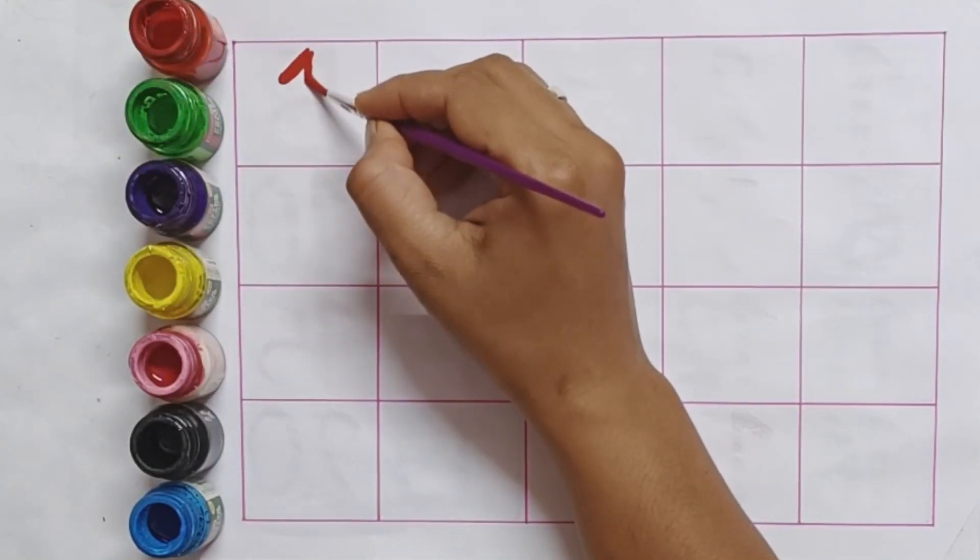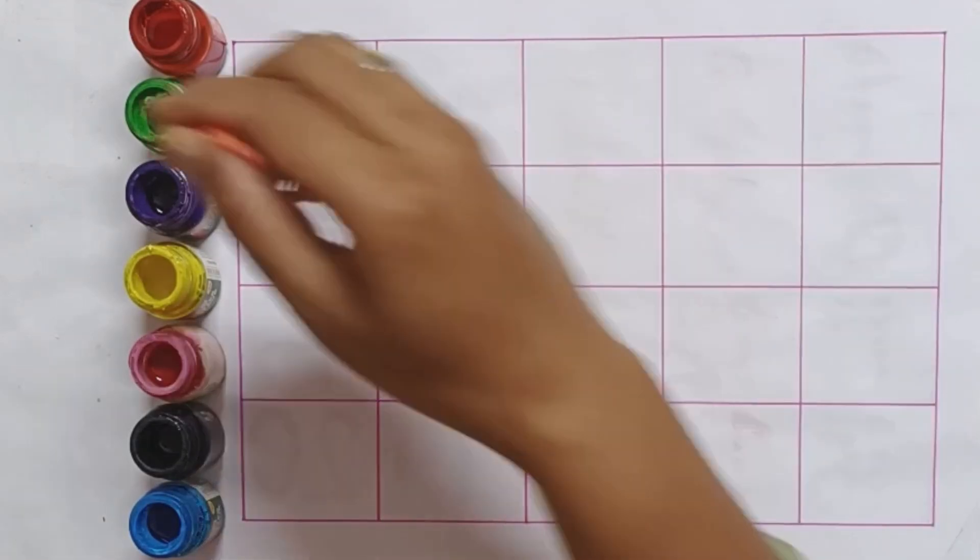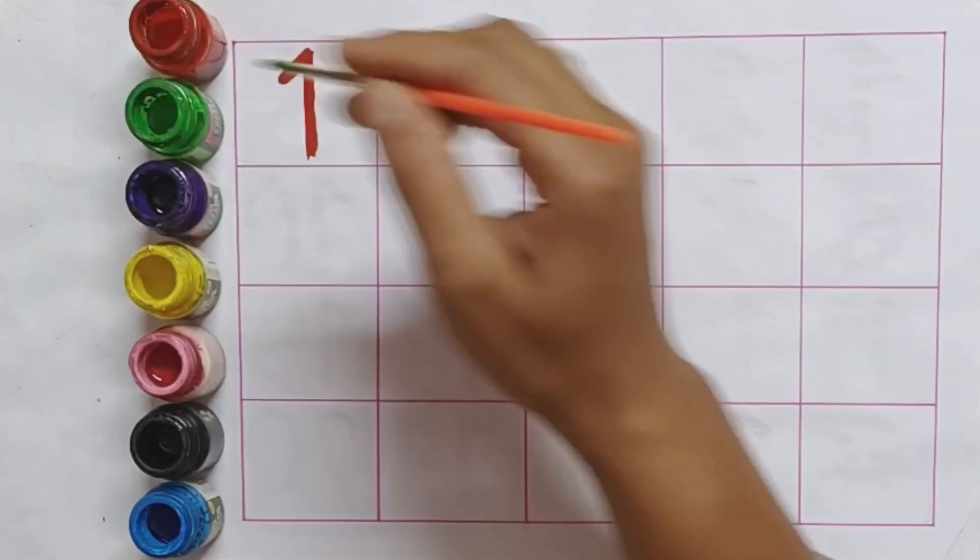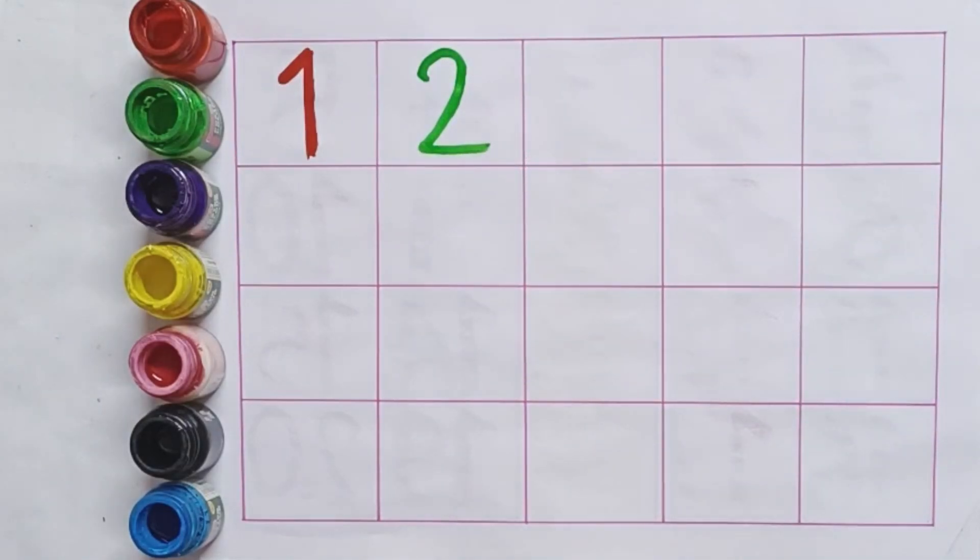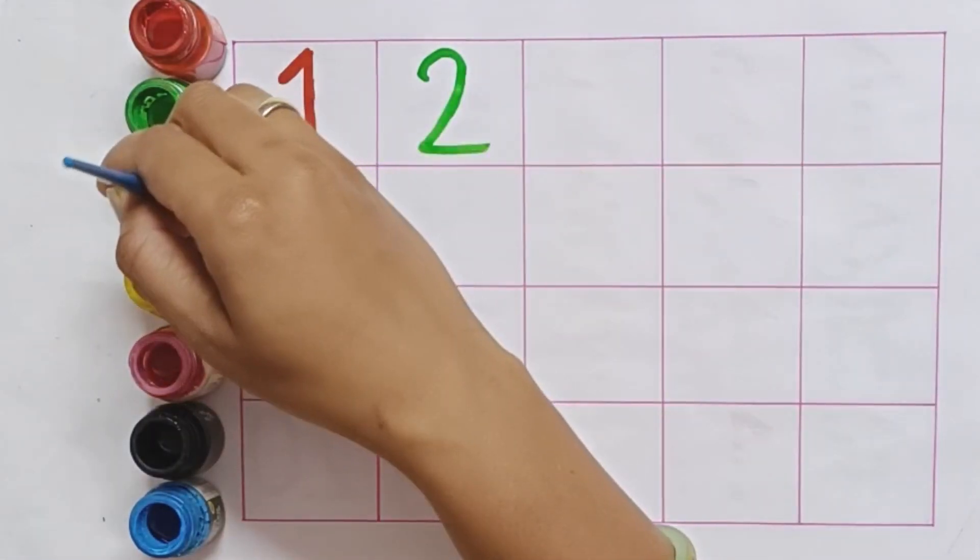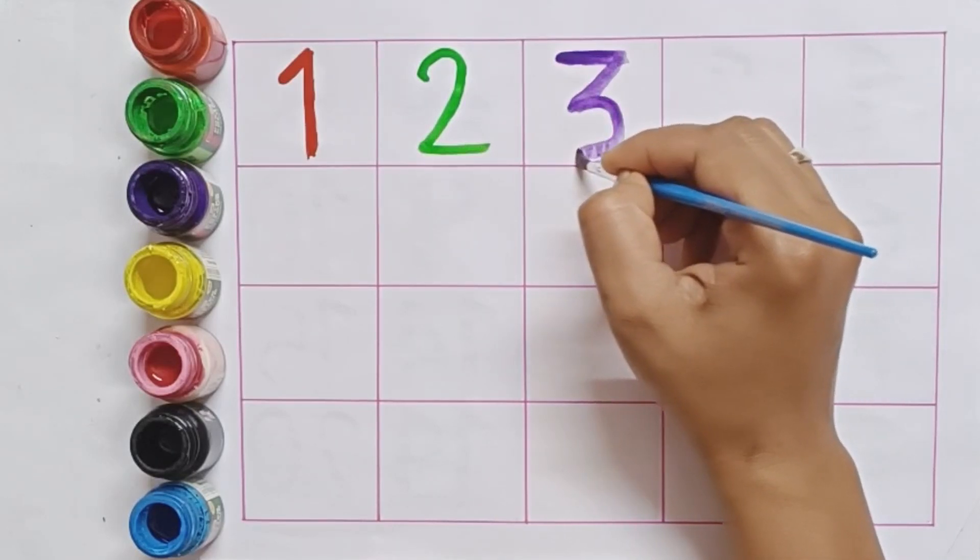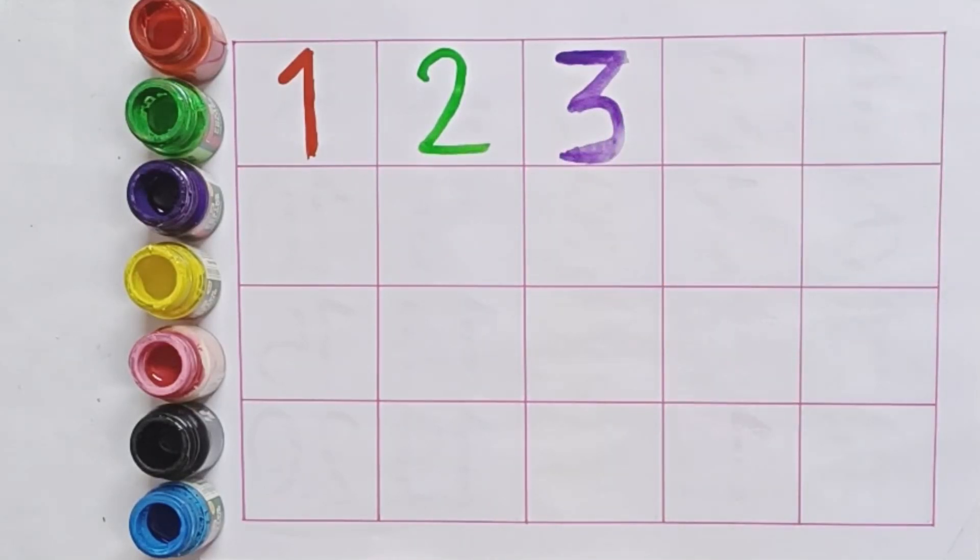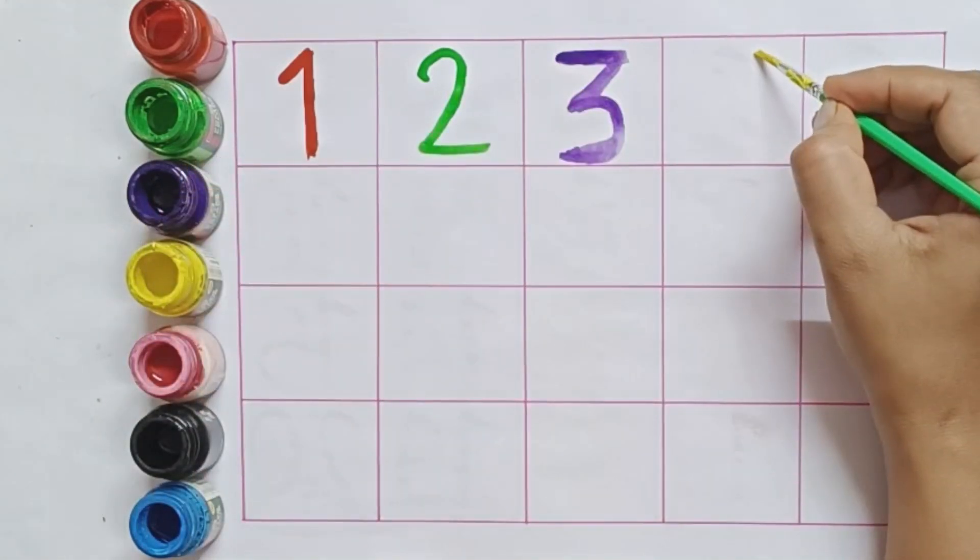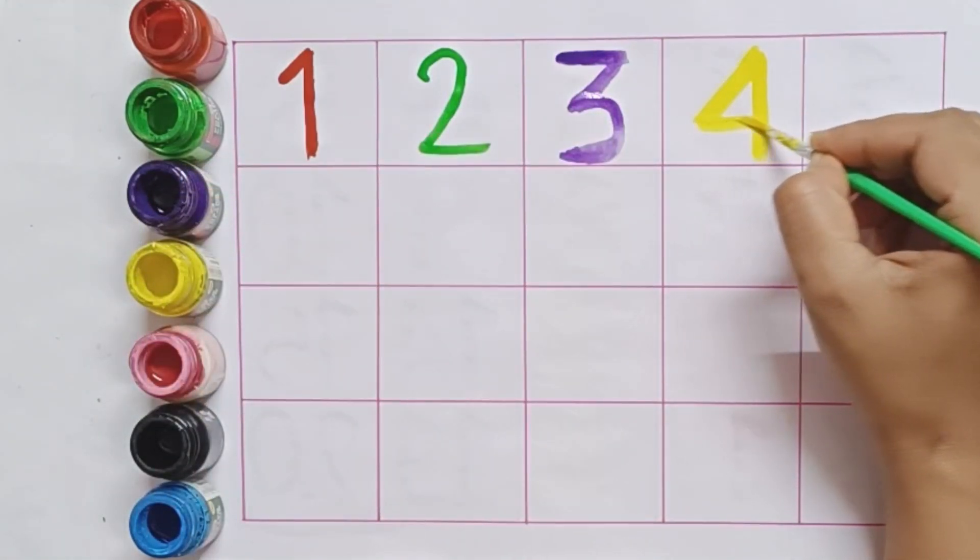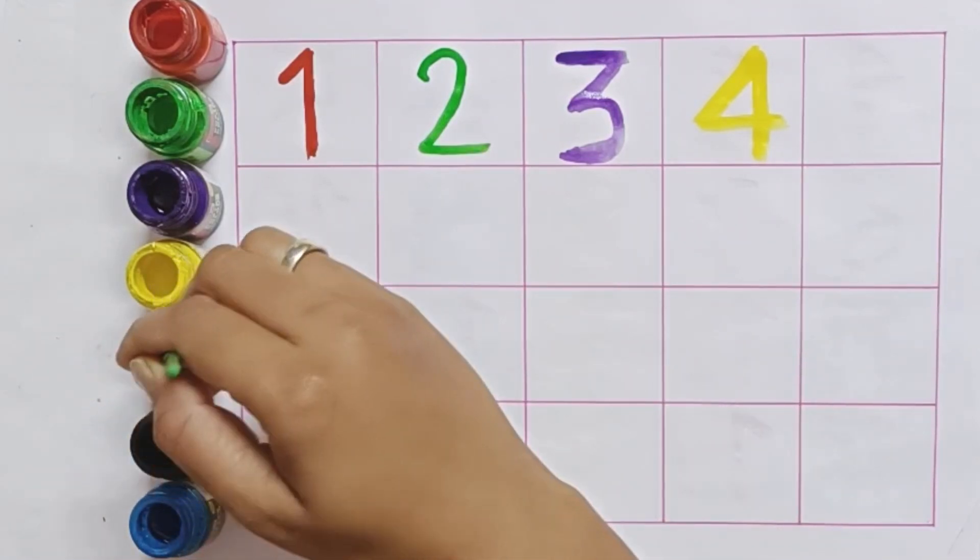1. O-N-E-1. 2. T-W-O-2. 3. T-H-R-E-E-3. 4. F-O-U-R-4. 5. F-I-V-E-5.